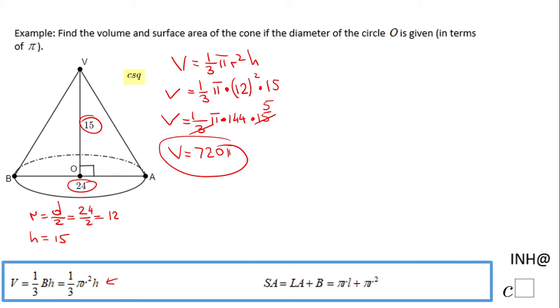Now we can move to the next part, which is the surface area. You see the formula here: πrl, where l stands for the slant height—this is the slant height of this cone—plus πr². So the first thing we need to do is to find the slant height.